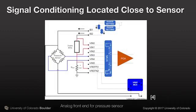The raw output of most sensors is easily corrupted. Hence, signal conditioning circuitry is located very close to the sensor, helping to shield against external interference. Once converted, the digital signal can easily be transmitted over great distances with minimal error.